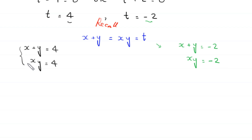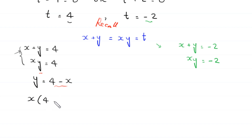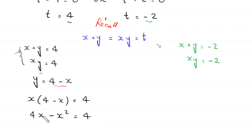First we solve the system where t equals 4. From x plus y equals 4, we find y equals 4 minus x. Substituting into xy equals 4, the equation becomes x times 4 minus x equals 4, which expands to 4x minus x squared equals 4.